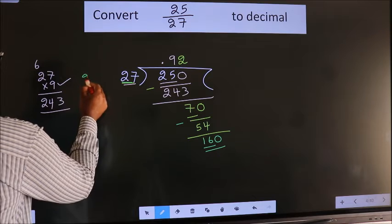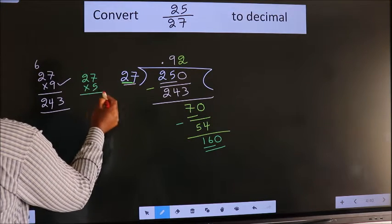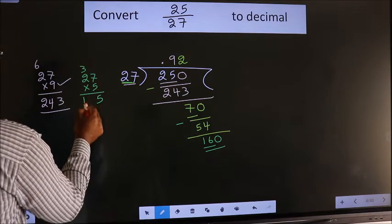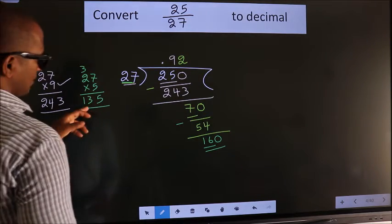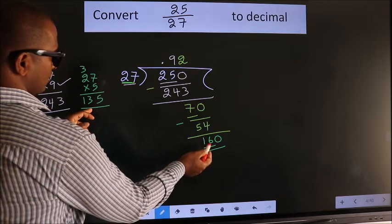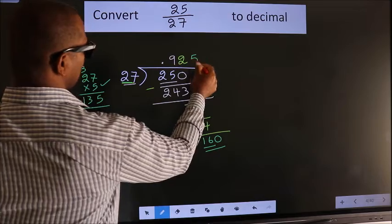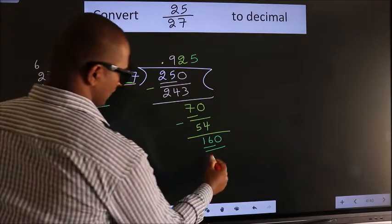Let us go with 5. So 27 times 5: 5 times 7 is 35, 5, 3, 5, 2 is 10 plus 3 is 13, so 135, close to 160. So we go with 5. So 5 times is 135.